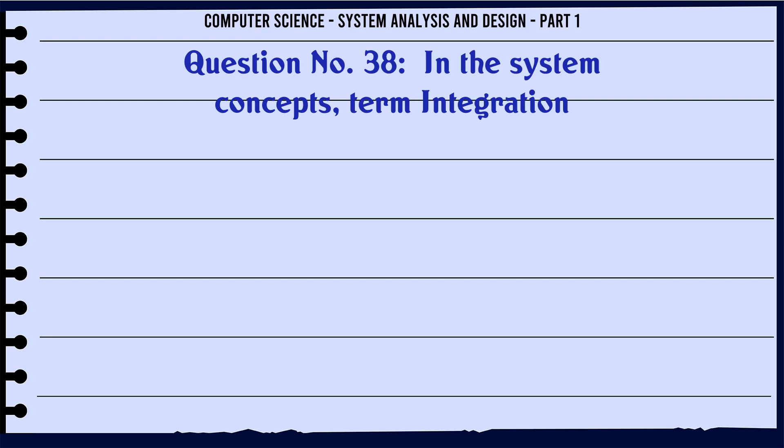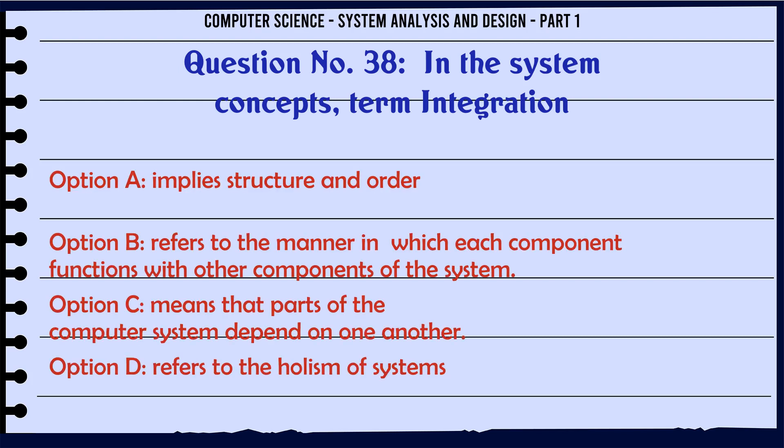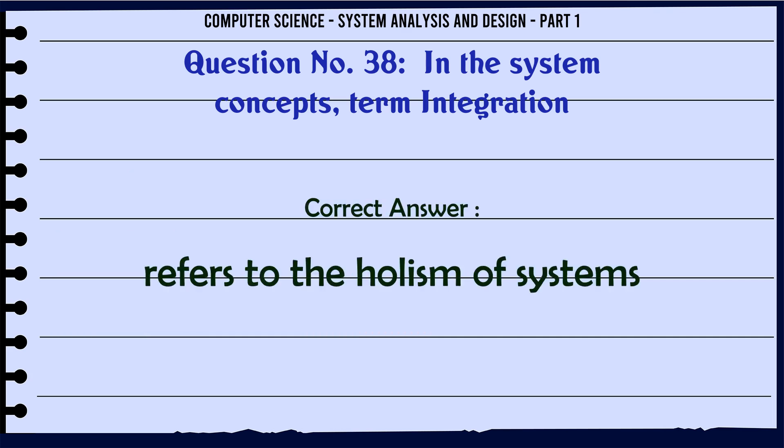In the system concepts, the term 'integration': A. Implies structure and order. B. Refers to the manner in which each component functions with other components of the system. C. Means that parts of the computer system depend on one another. D. Refers to the holism of systems. The correct answer is: Refers to the holism of systems.